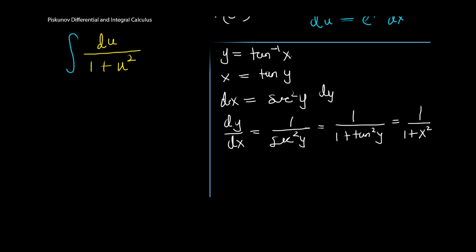So if the derivative of tan^(-1)(x) is 1/(1 + x^2), then the integral of 1/(1 + x^2) dx should be tan^(-1)(x), and that's what we have here.